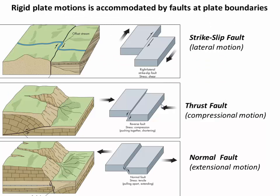In addition to destroying and creating new plates, we also have to move these plates past each other from time to time. And because the interior of these plates are quite rigid and very strong, we get most of the rubbing and bumping along the edges of the plates or at the plate boundaries. That movement along the boundaries is accommodated by what are called faults or breaks in the Earth's crust. We can think of three types of faults. One is a strike-slip fault, where two plates move laterally past each other. Another is a thrust fault, where one plate is ramped up over another plate. And another would be a normal fault, where one block of crust is actually dropped down relative to the other.